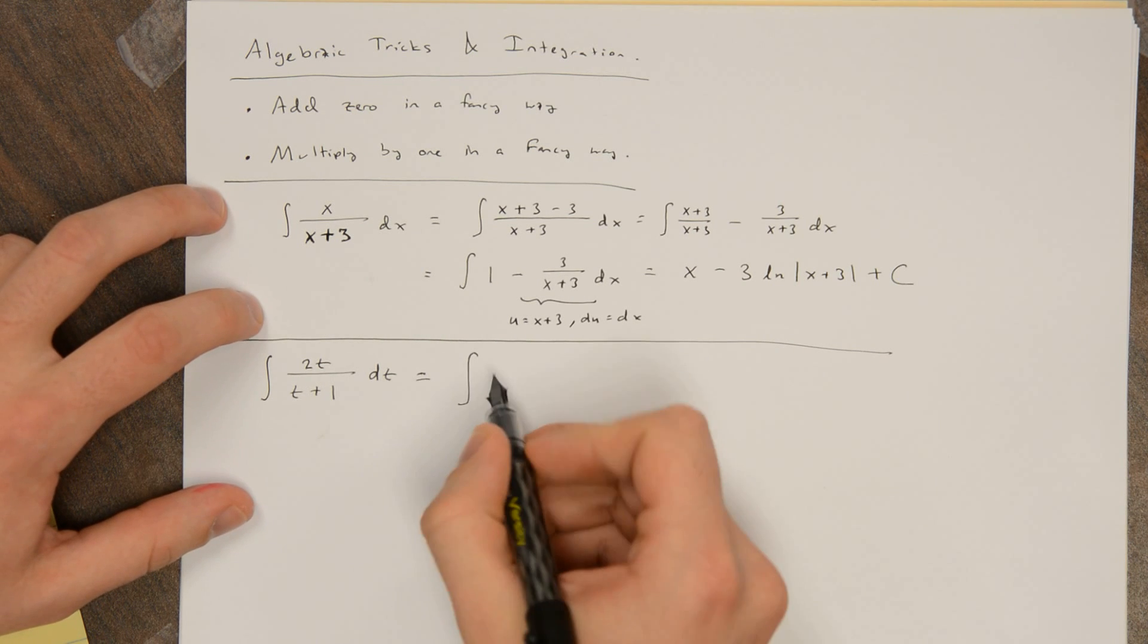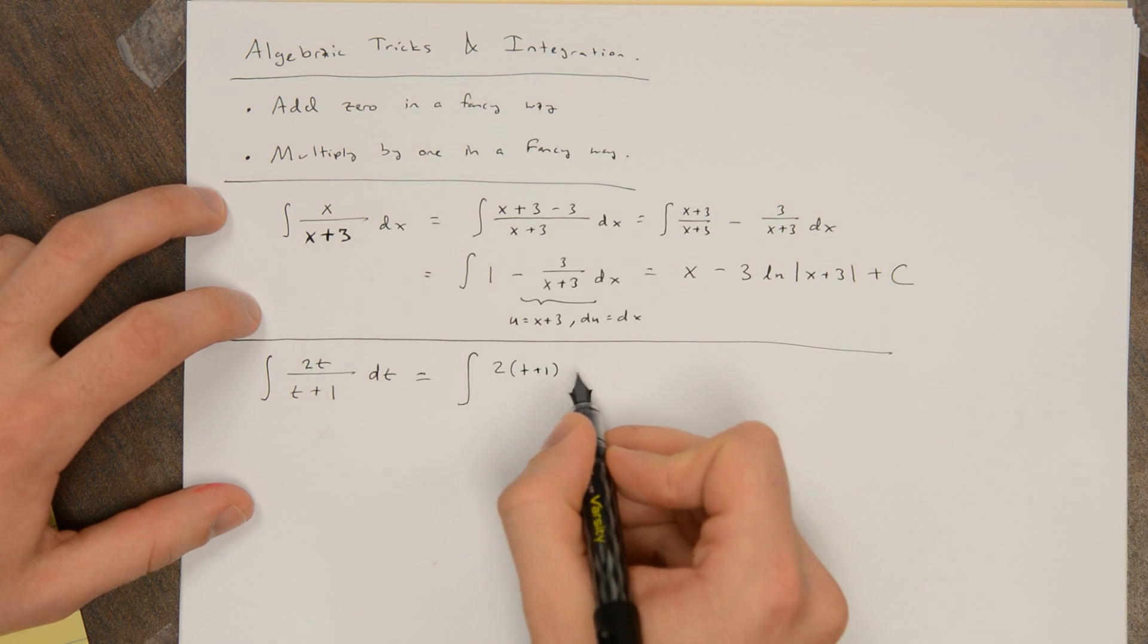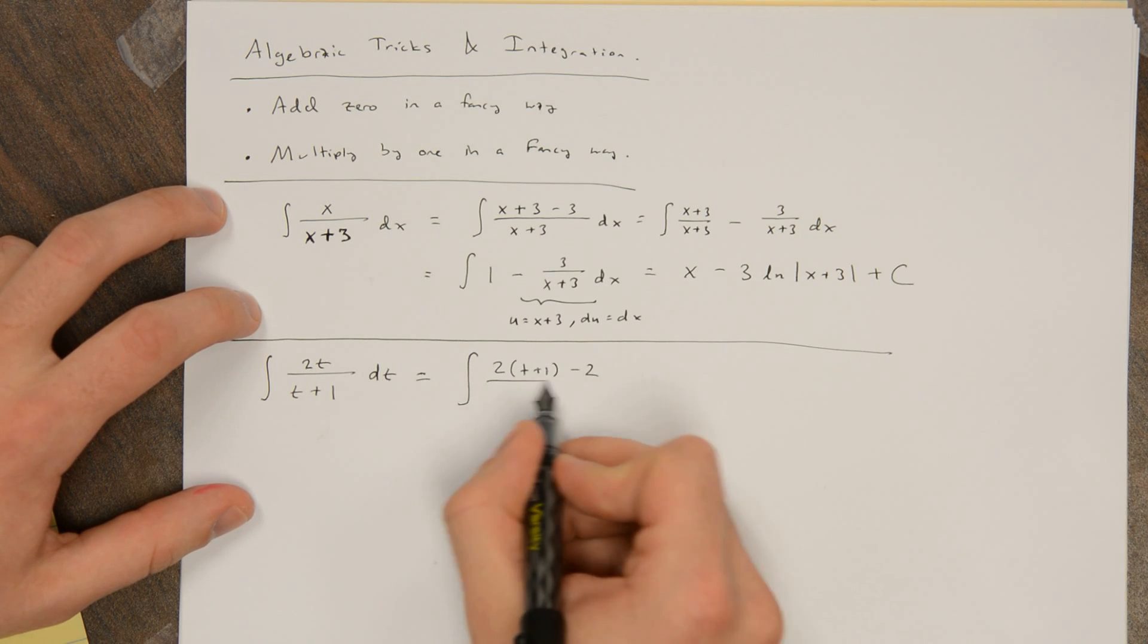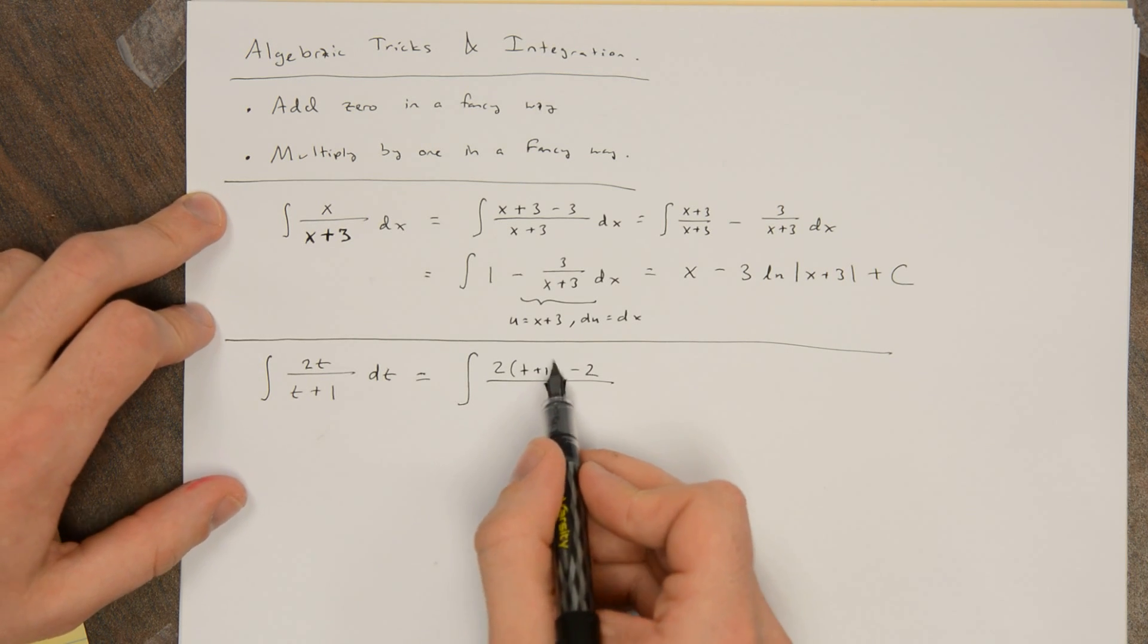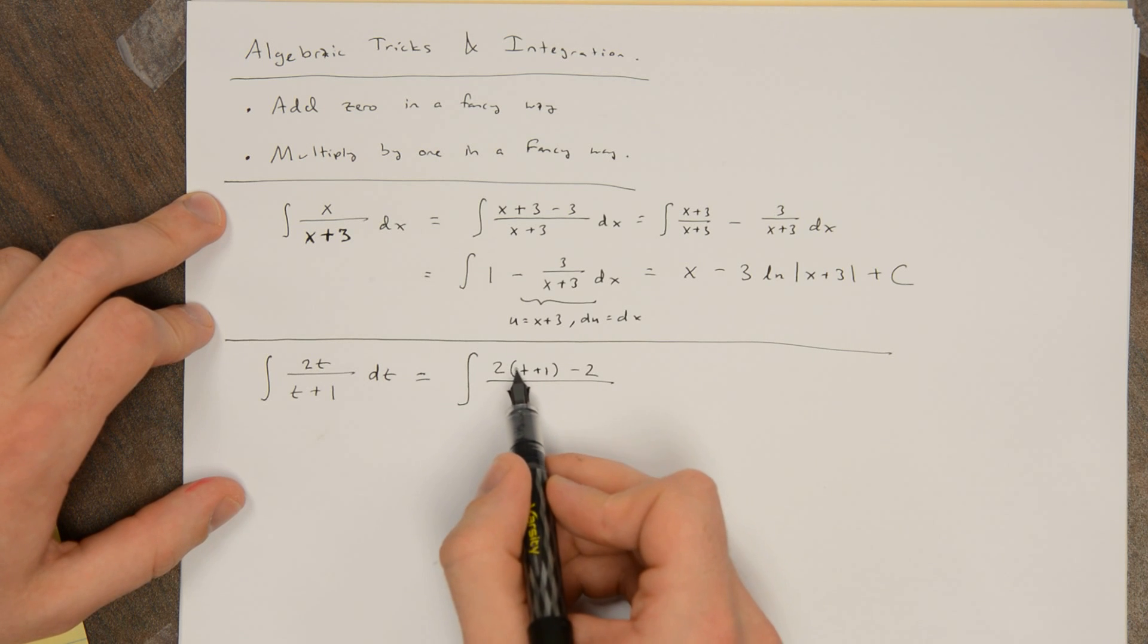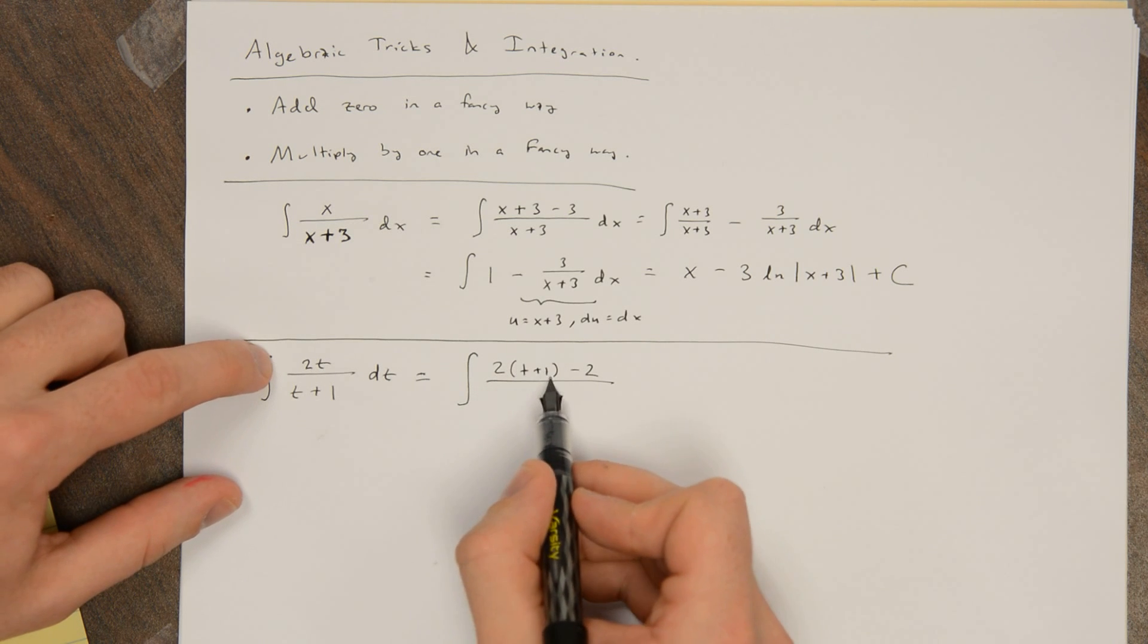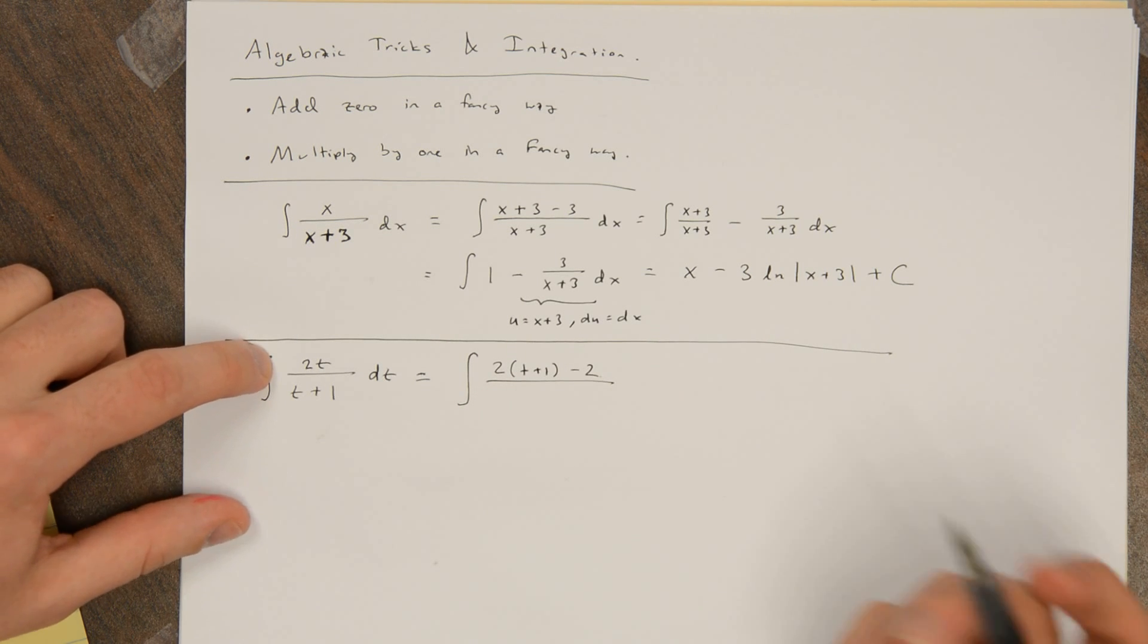So I could integrate twice. I could add and subtract 2 here, right? So I make there be a t plus 1, and then this is 2t, which is what I have, plus 2. So I need to subtract 2 so I don't change anything.